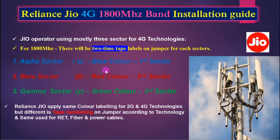Because for different frequencies they use different numbers of tape wraps. If they are using 2300 megahertz, they will do one-time tape. For 1800 megahertz, they will use two-time tape. For 850 megahertz, they will use three-time tape on all cables. If using feeder cable, it will also be marked with the same level on the feeder.